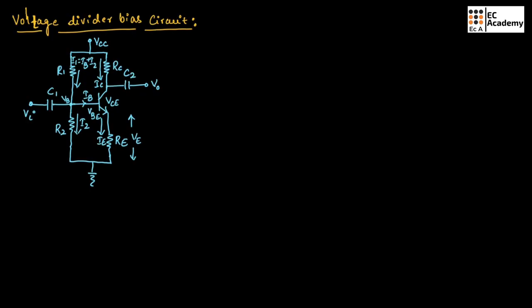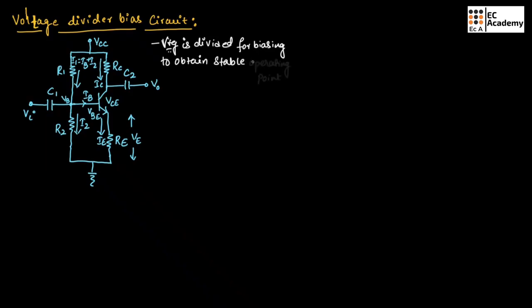In the voltage divider bias circuit, the voltage is divided for biasing to obtain a stable operating point.